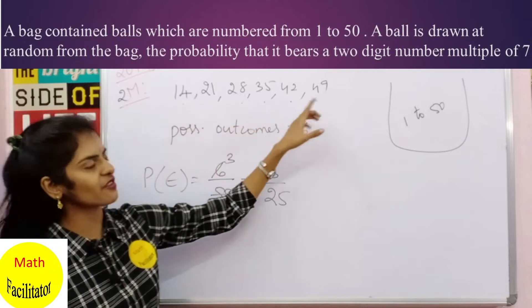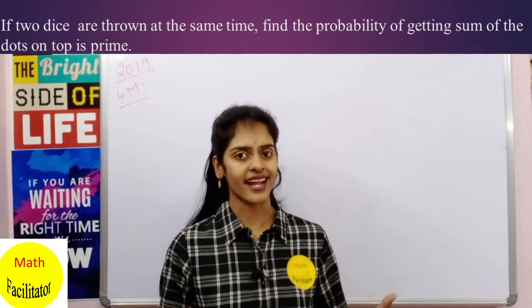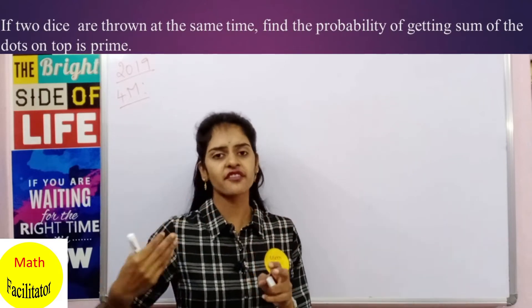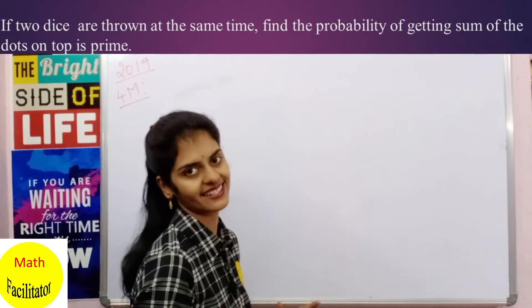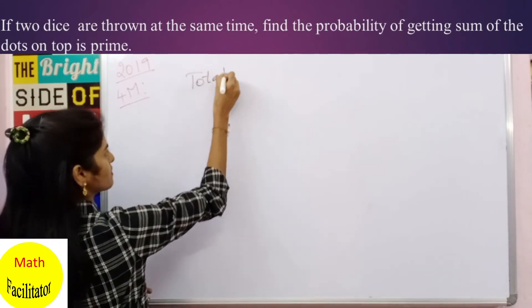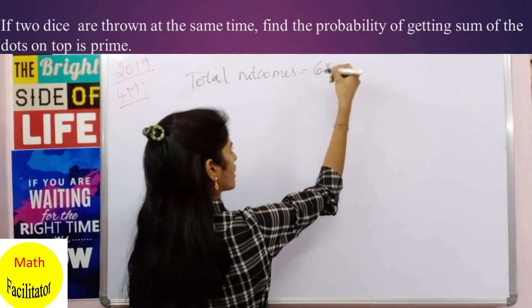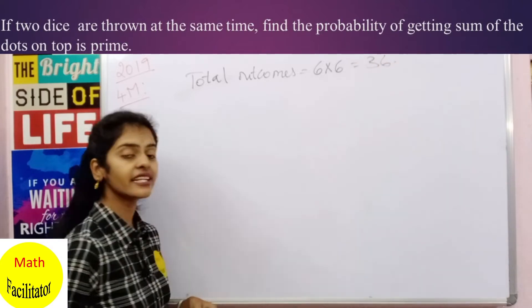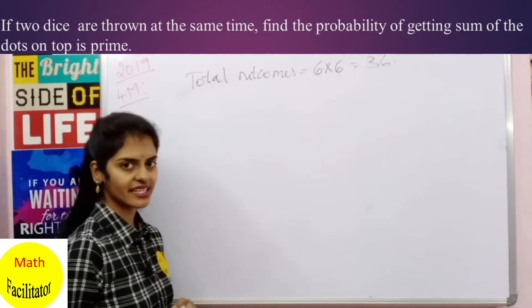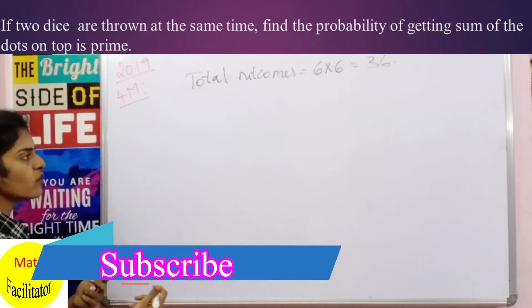Moving on to the next question — this is from 2019, a four-marker. When two dice are thrown at random, each die has six faces numbered 1 to 6. The total number of outcomes when throwing two dice is 6 × 6 = 36. The question asks: what is the probability of getting the sum of the dots on top as a prime number?